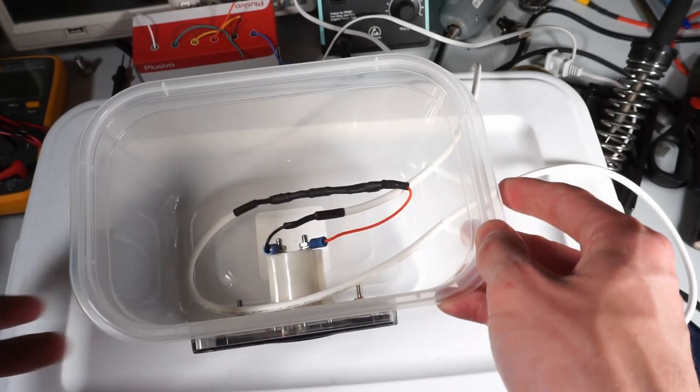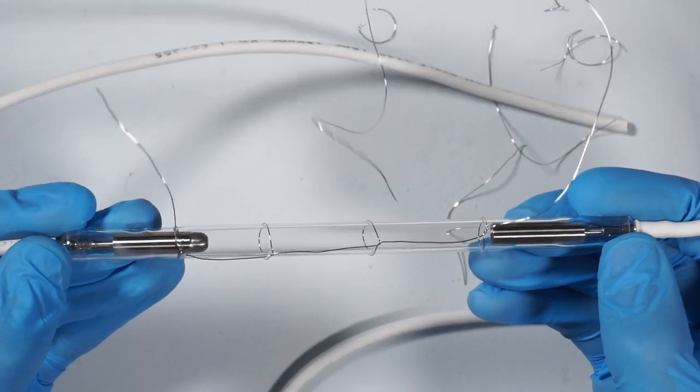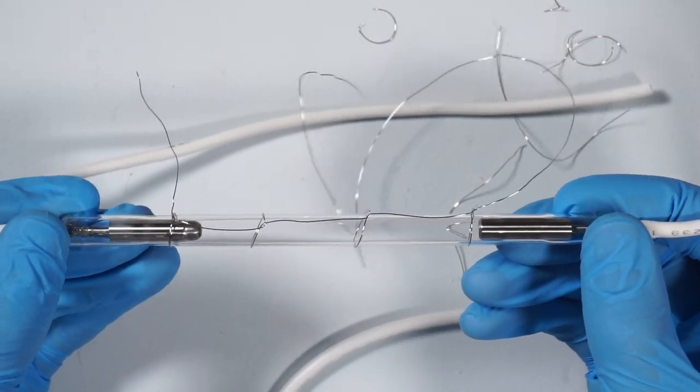If this cap bank was connected across the flash lamp as it is, nothing would happen. The 1100 volts across the caps is not enough to overcome the massive resistance between the two electrodes.